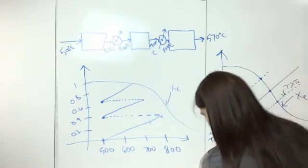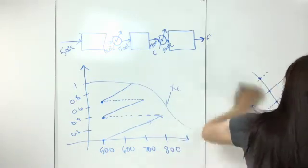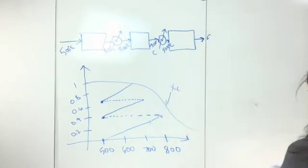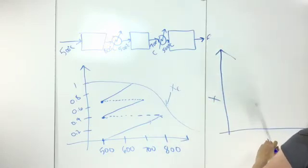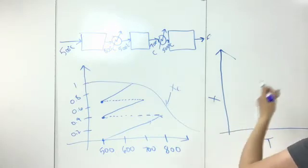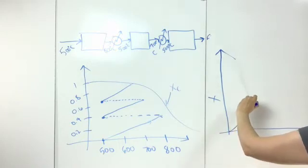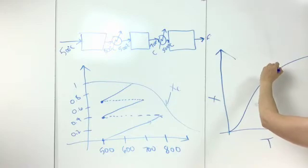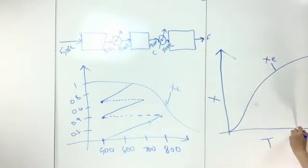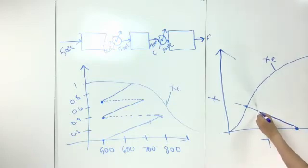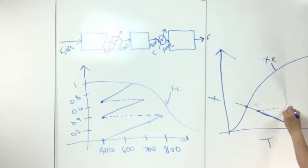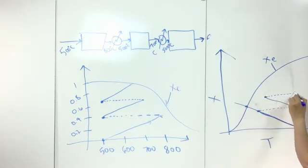For an endothermic reaction, the XE curve would look different — it increases with temperature. The energy balance line would slope the other way. If you were doing interstage heating, the conversion path would step up: you heat the stream, the conversion increases, then you heat it again, and it increases further. This shows how interstage heating works for an endothermic reaction.